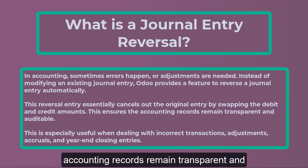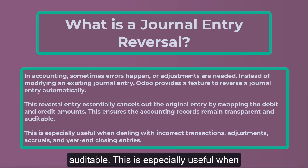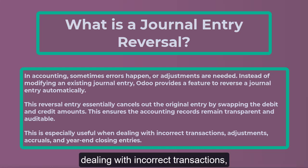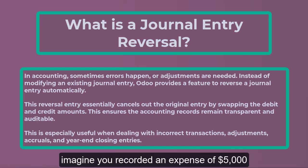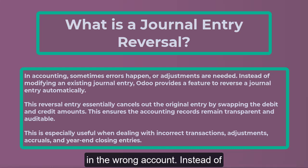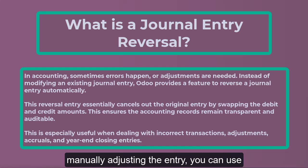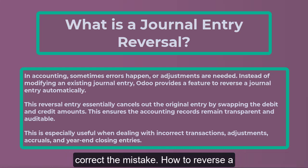This ensures the accounting records remain transparent and auditable. This is especially useful when dealing with incorrect transactions, adjustments, accruals, and year-end closing entries. For example, imagine you recorded an expense of $5,000 in the wrong account. Instead of manually adjusting the entry, you can use Odoo's reversal feature to automatically correct the mistake.